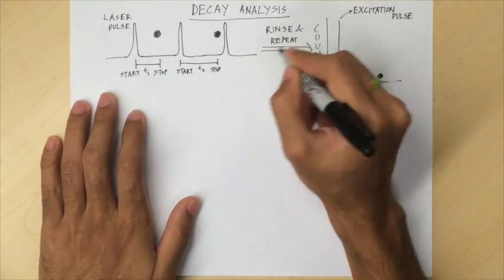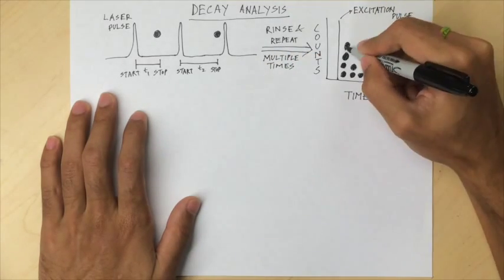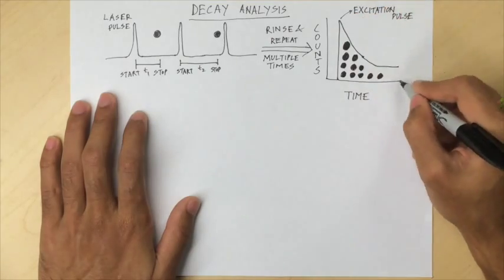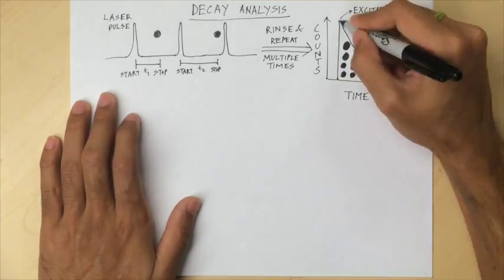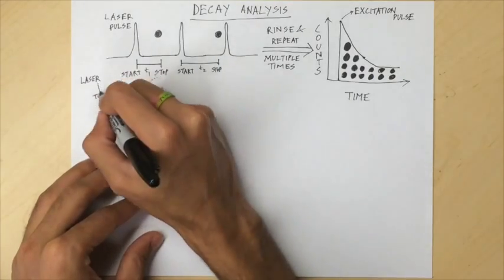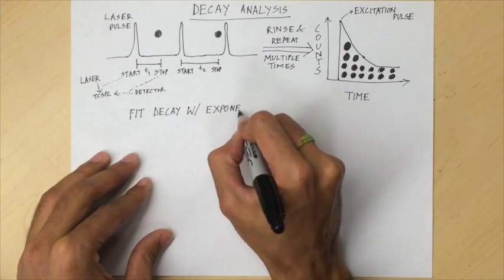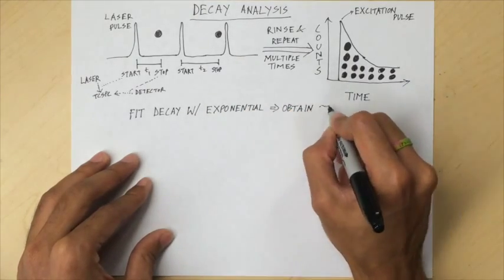By repeating the excitation-emission process several times, a histogram of counts versus time is developed. Most photons reach the detector soon after the excitation pulse, followed by a drastic decrease in the number of photons with time. Fluorescence lifetime is determined by fitting this histogram with an exponentially decaying function.